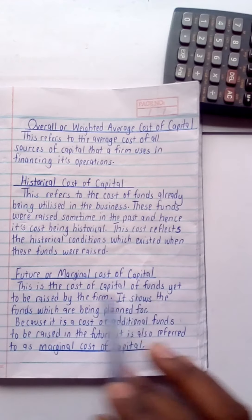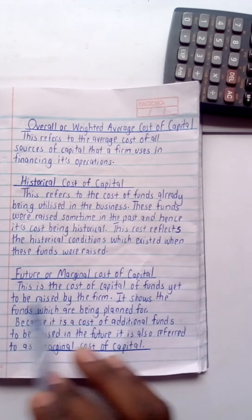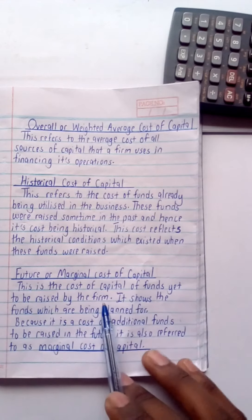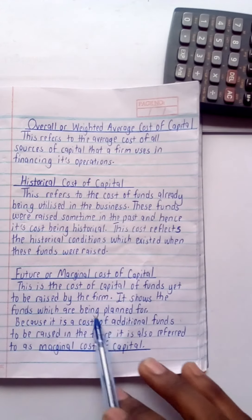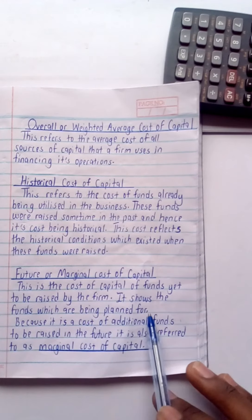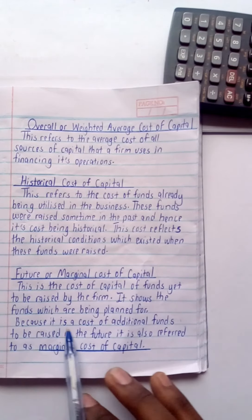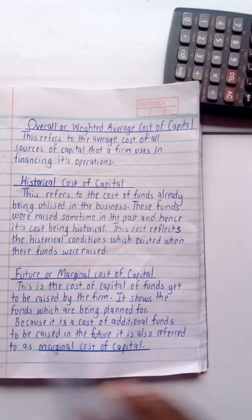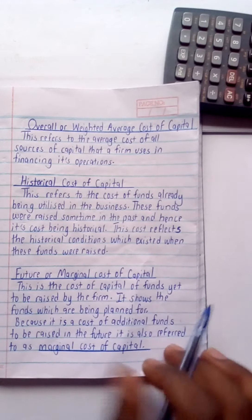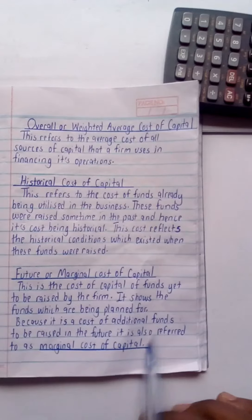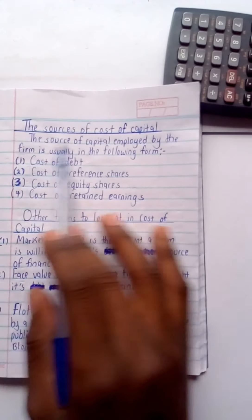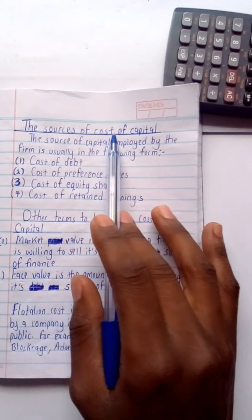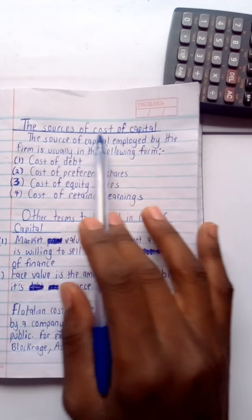Looking at the future or marginal cost of capital — this is the cost of capital of funds yet to be raised by the firm. It shows the funds which are being planned for. Because it is the cost of additional funds to be raised in the future, it is also referred to as marginal cost of capital.